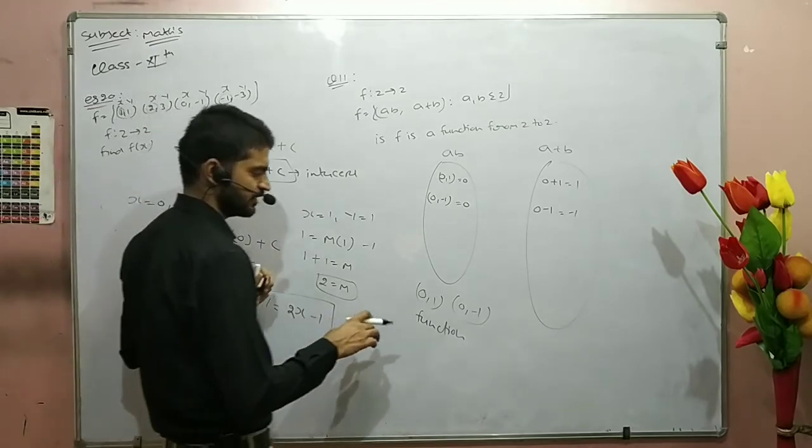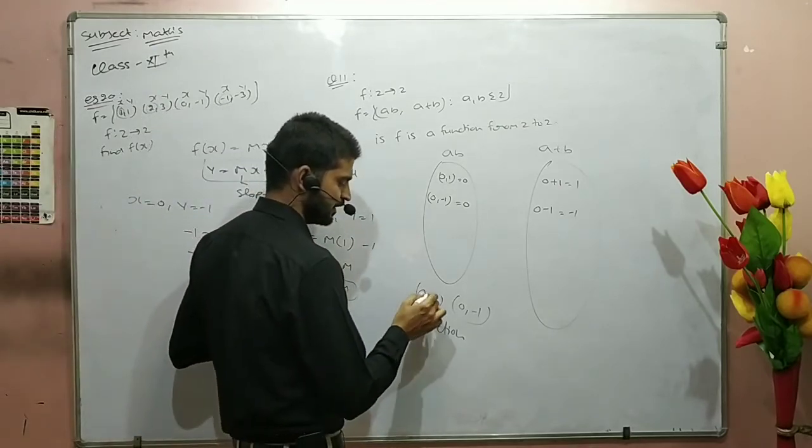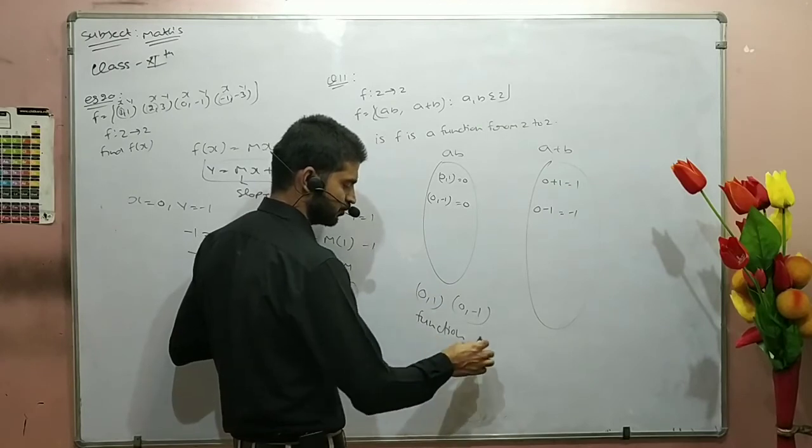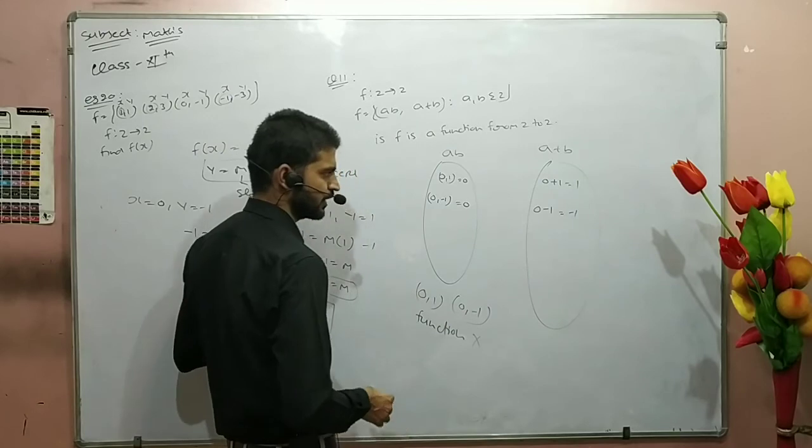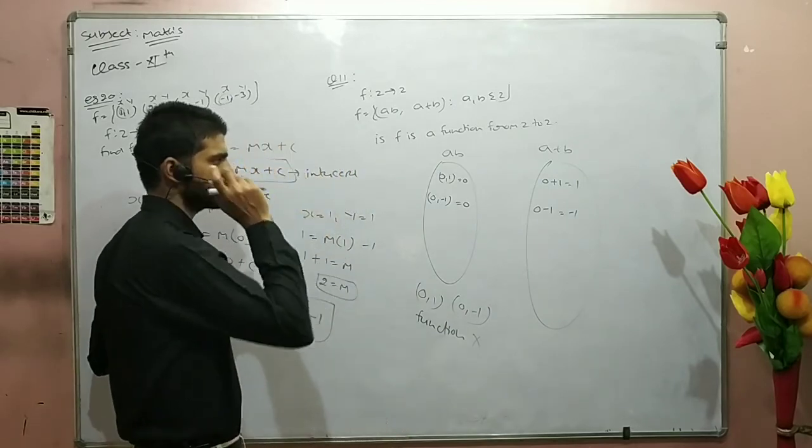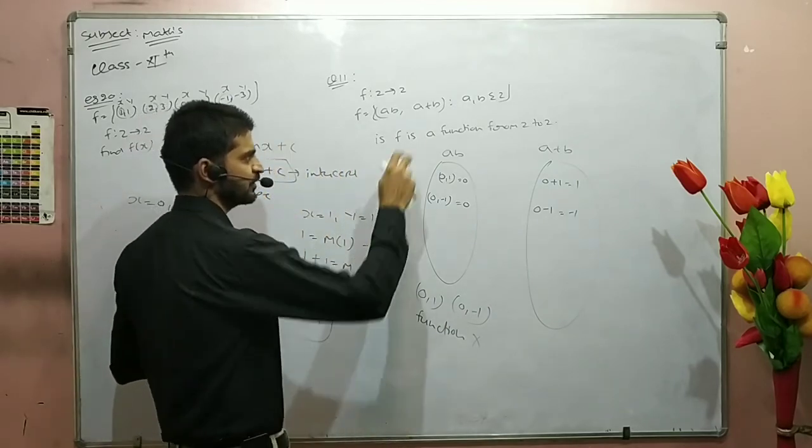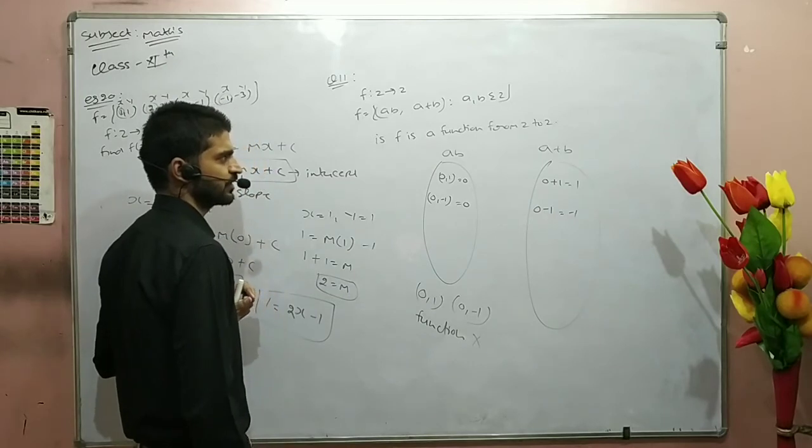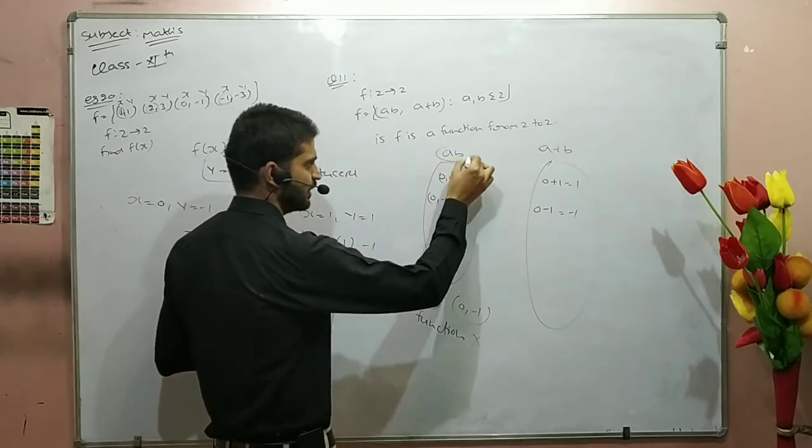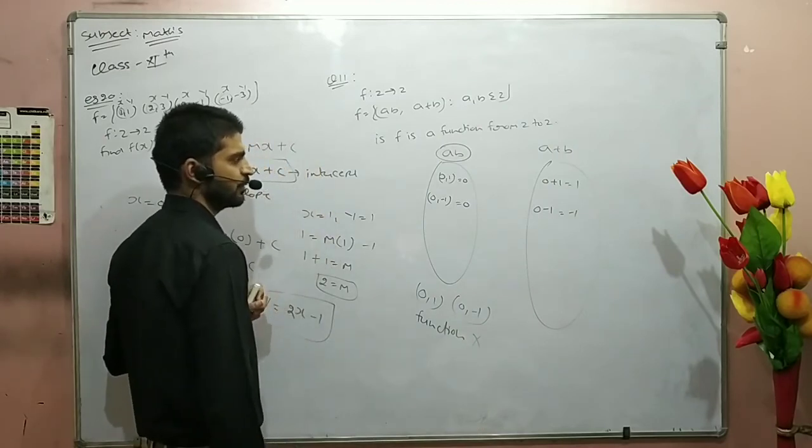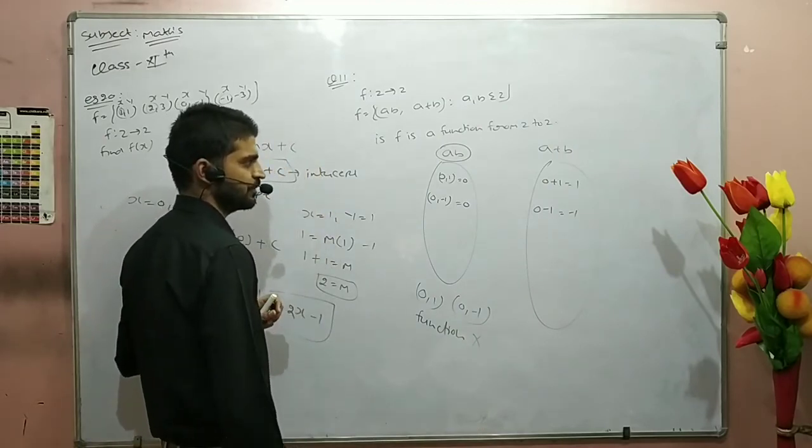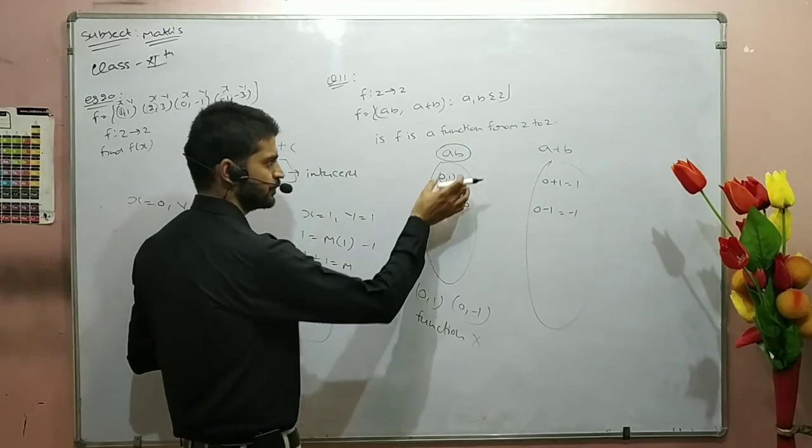Each element is different from the image, so this function is not valid because 0 has two images: image 1 and image -1. I took two elements that took two pieces, and I used to take two elements.